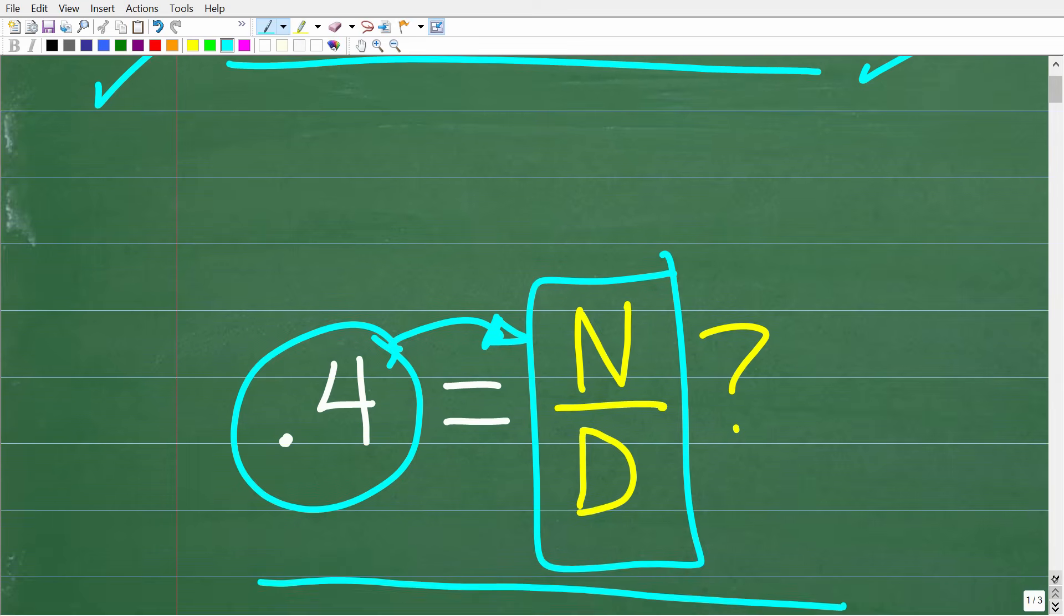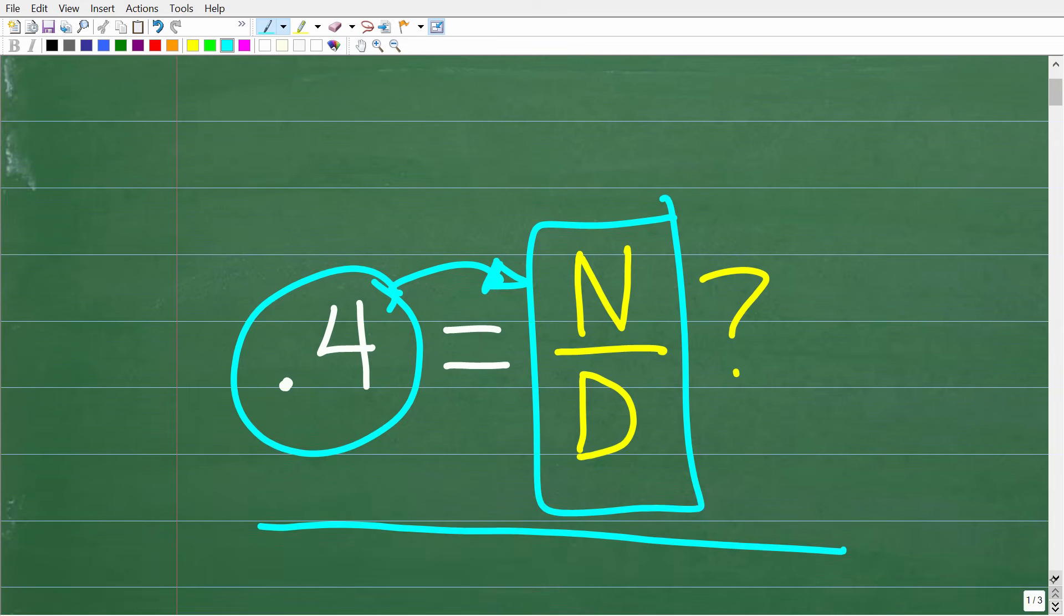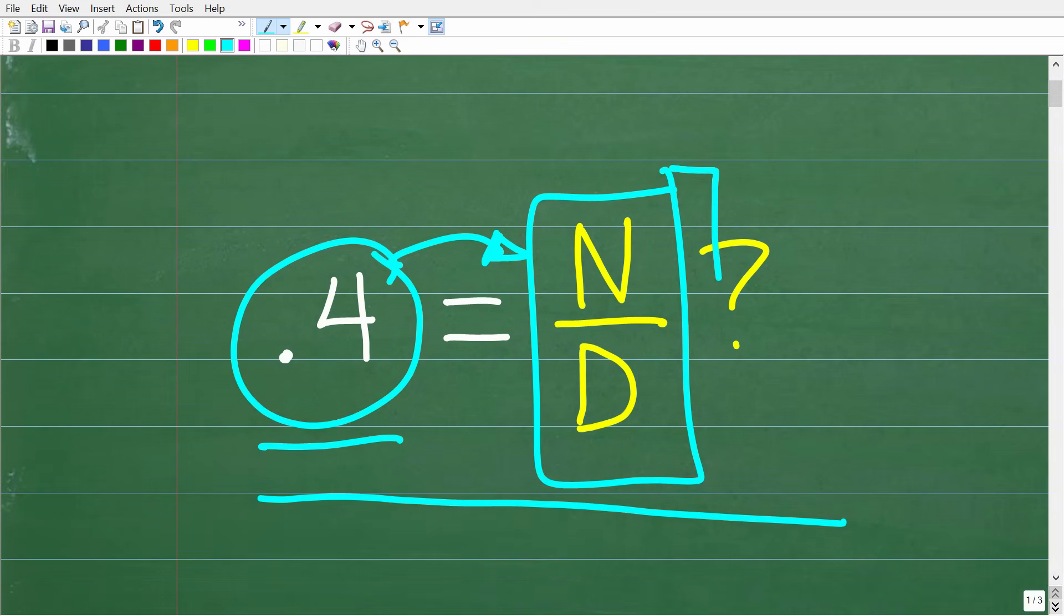Okay, this is a critically important basic math skill. How do we write decimals as fractions? 0.4 is equivalent to what fraction? Well, let's take a look at how easy it is to do this.